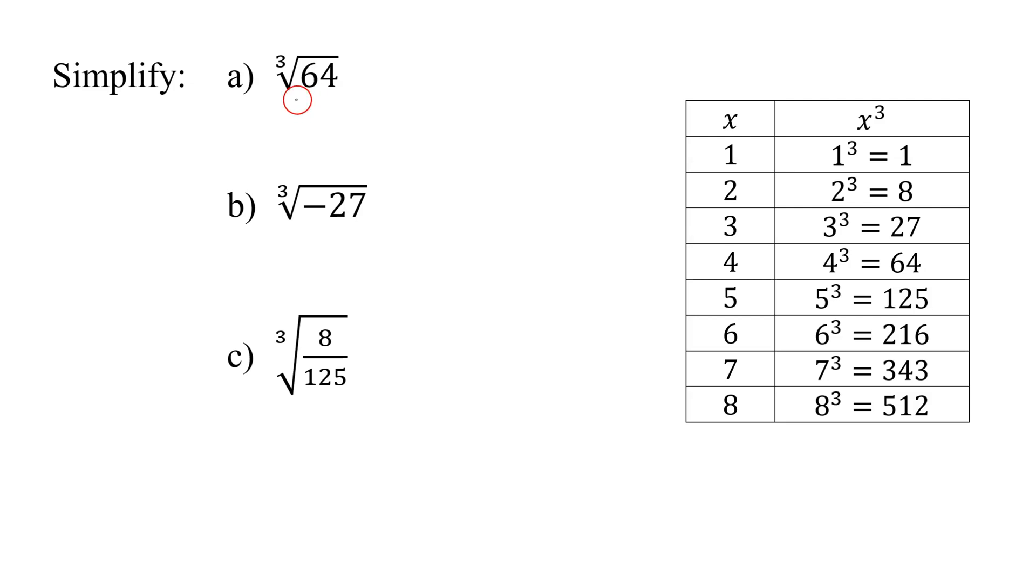So if I look at the first example, the cube root of 64, I think this is a tricky one because 64 is a perfect square, but it's also a perfect cube. So be very careful with 64. As you can see over here in our table, 64 is 4 cubed.